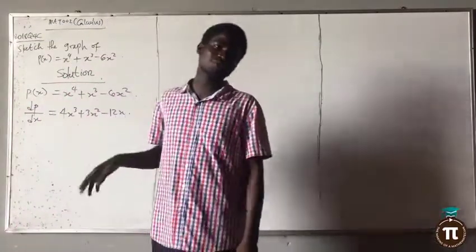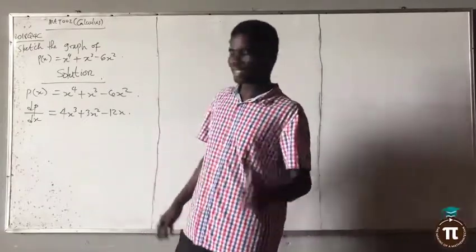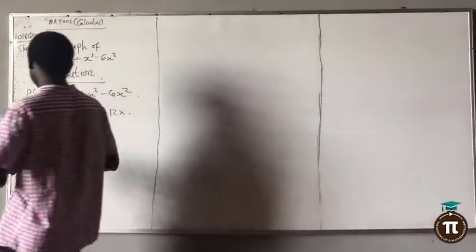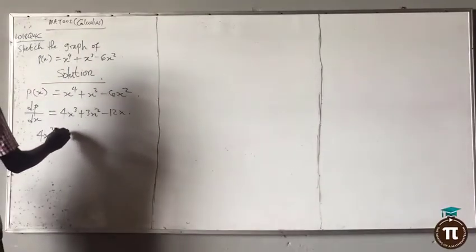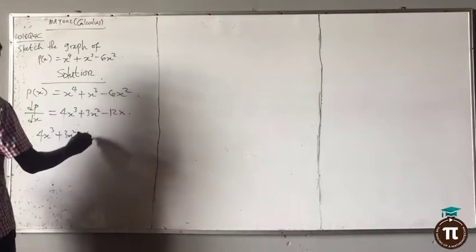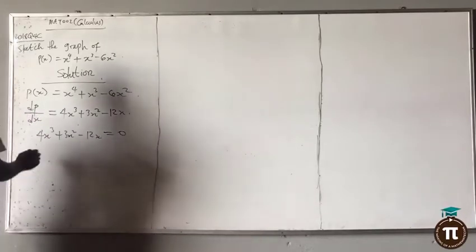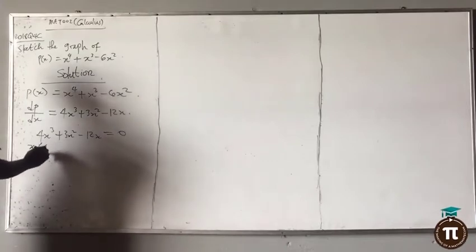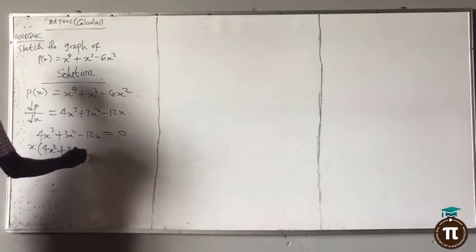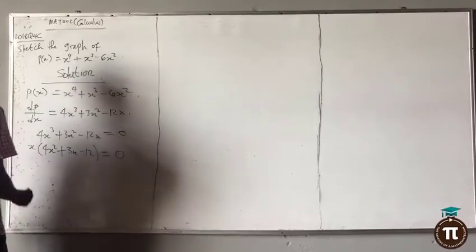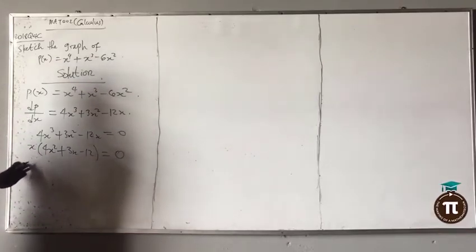So: 4x³ + 3x² − 12x = 0. Factorize this — you are left with x times (4x² + 3x − 12) = 0. So when you solve this, x equals zero, or 4x² + 3x − 12 = 0.